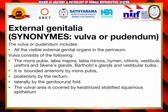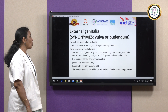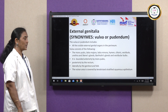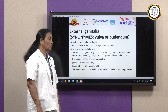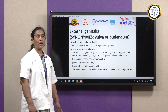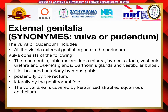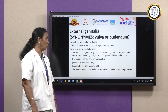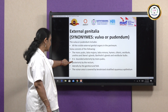The external genitalia are otherwise known as vulva or pudendum — these terms are synonymous. The vulva includes all the visible external genitalia organs in the perineum. The vulva consists of mons pubis, labia majora, labia minora, hymen, clitoris, vestibule, urethra, Skene's gland, Bartholin gland, and vestibular bulbs. Anteriorly it is bounded by the mons pubis, posteriorly by the rectum, and laterally by the genitrocrural fold. The vulva area is covered by keratinized squamous epithelium cells.